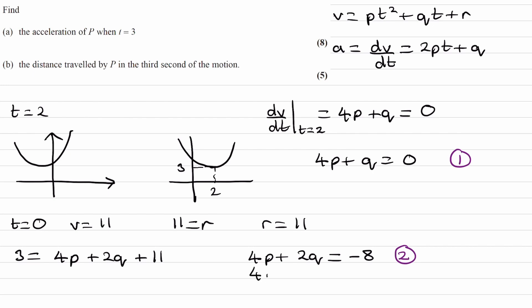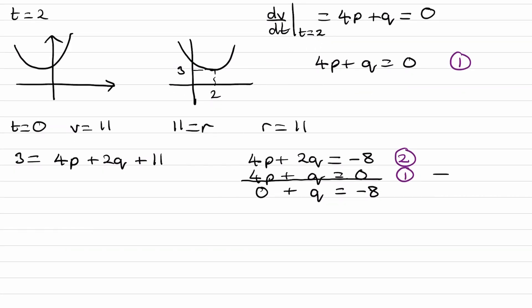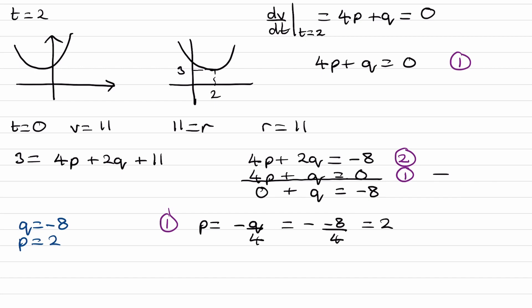Solving the two equations simultaneously — equation one is 4p plus q equals zero, equation two is 4p plus 2q equals negative eight. Subtracting equation one from equation two gives q equals negative eight. Substituting back into equation one: p equals negative q over four, which is negative of negative eight over four, so p equals two.